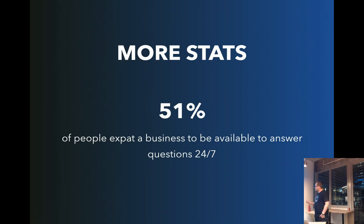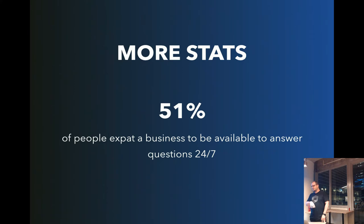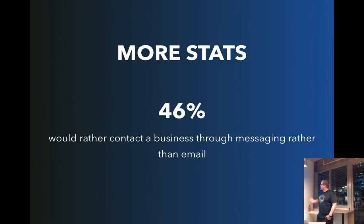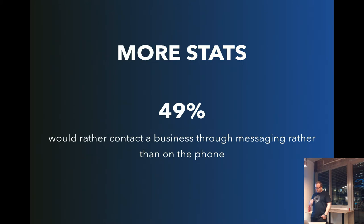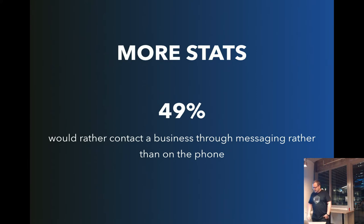People expect you to be available, and having some type of bot or FAQ system means people can speak to your business and you're not losing that customer experience. People will reach out when it's convenient for them, not you — if your business is 9 to 6 p.m., you can't expect people to have problems only in those hours. 46% would rather contact a business through messaging rather than email, and 49% would rather use messenger than a phone. That's why things like Foodpanda, GrabFood, and UberEats exist.